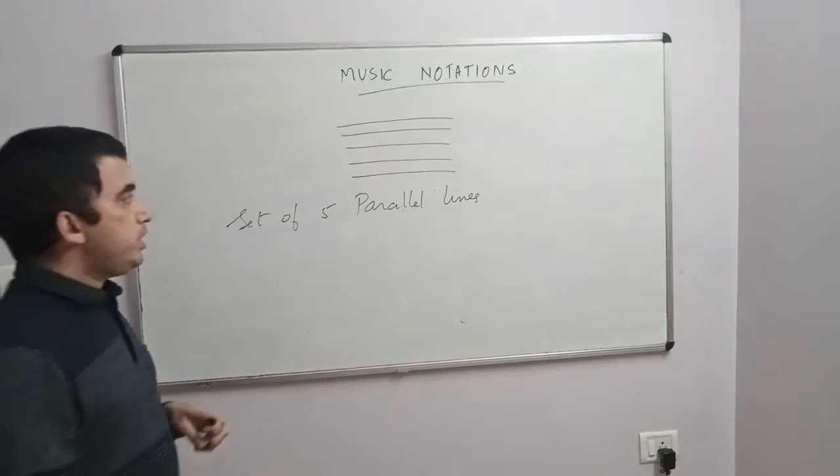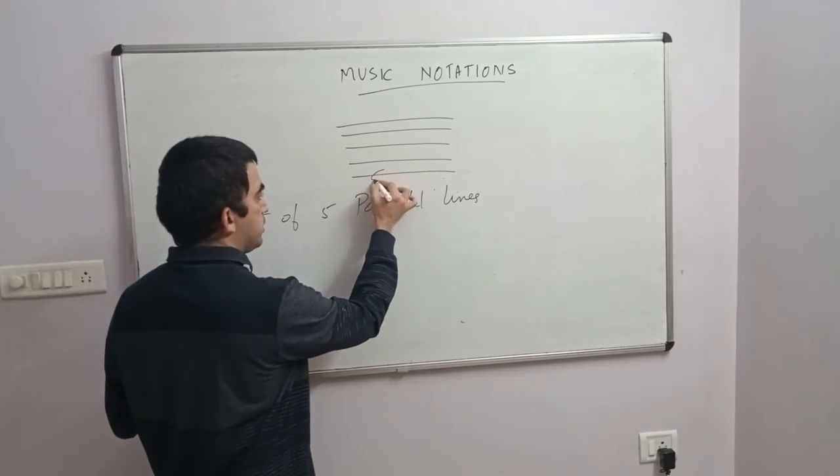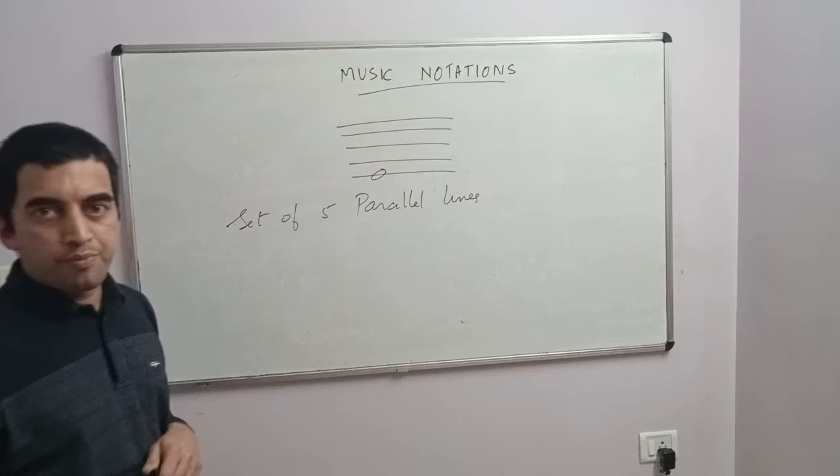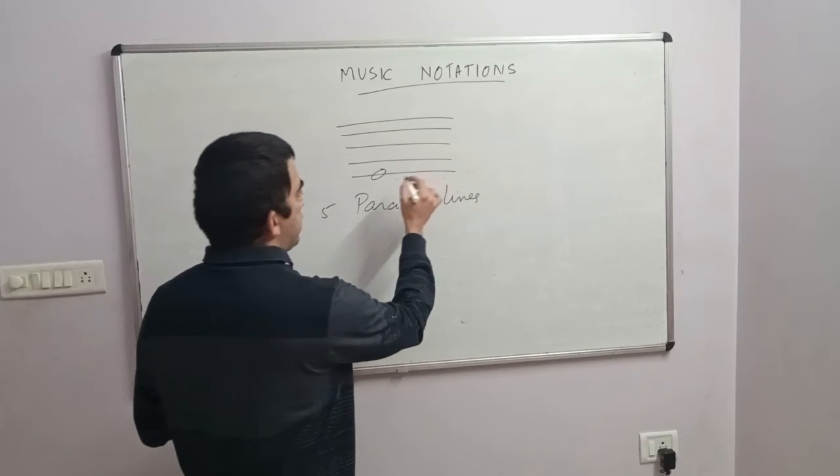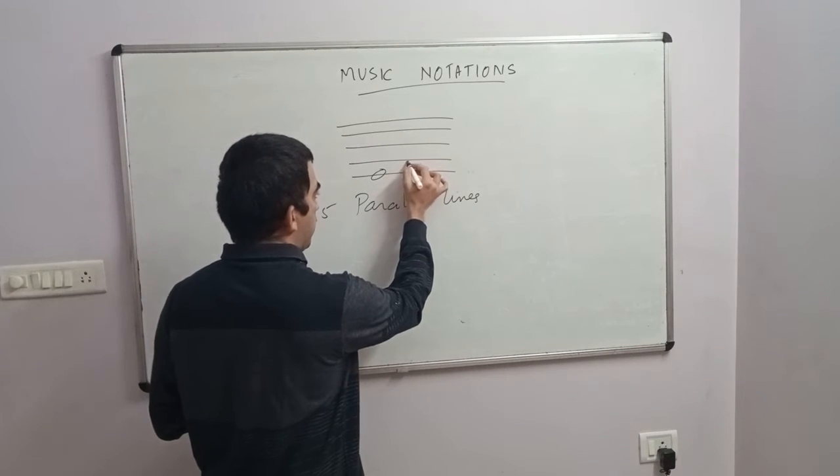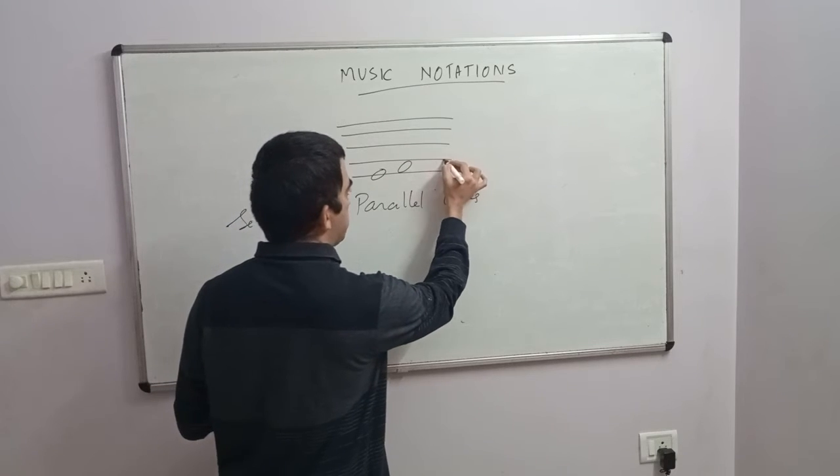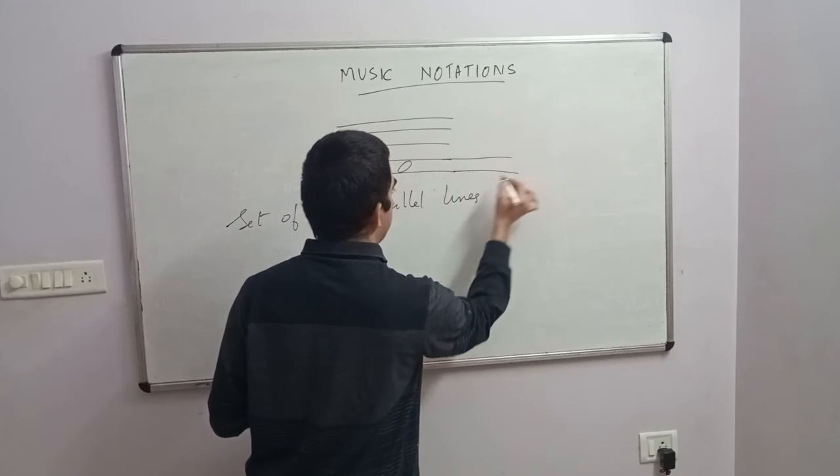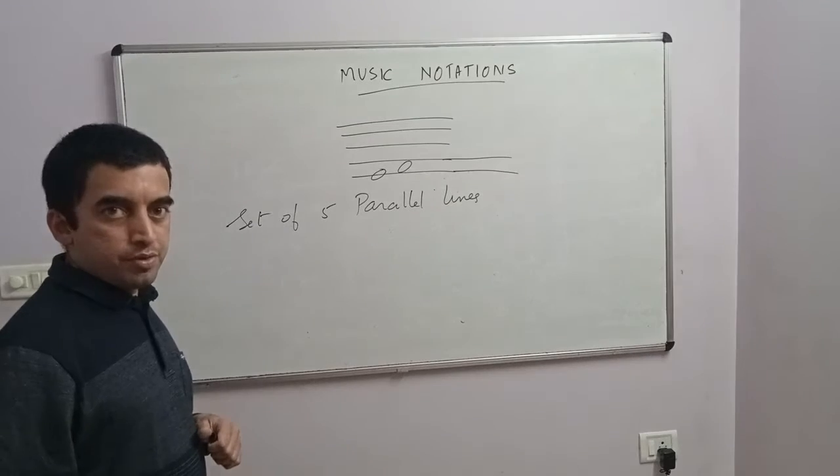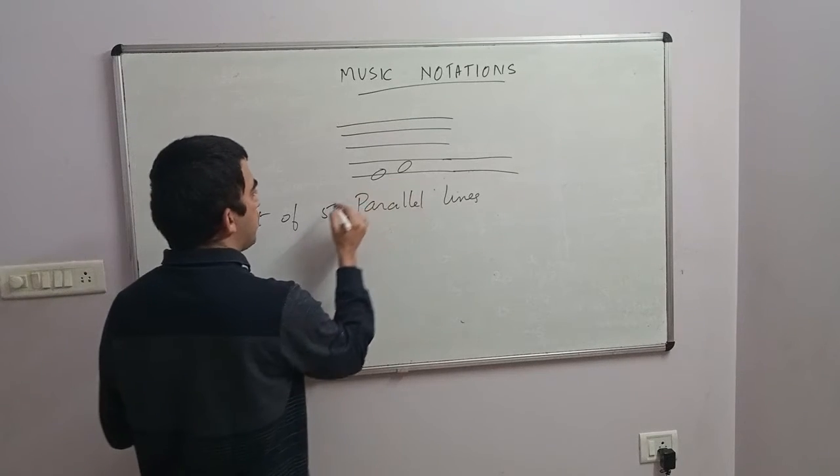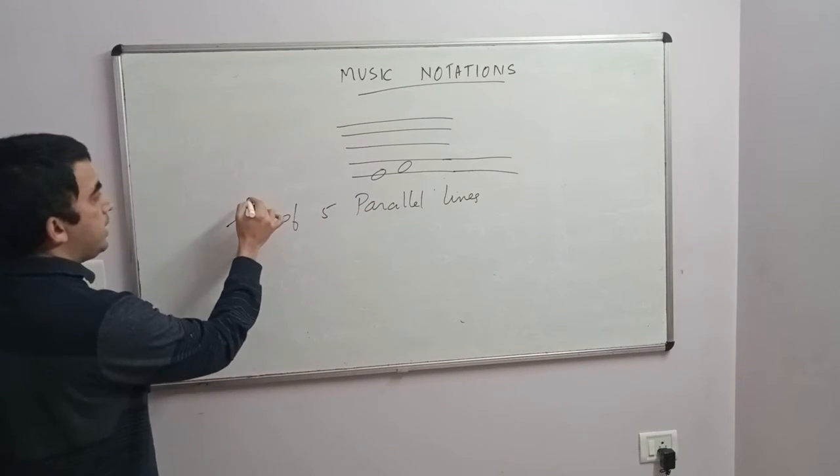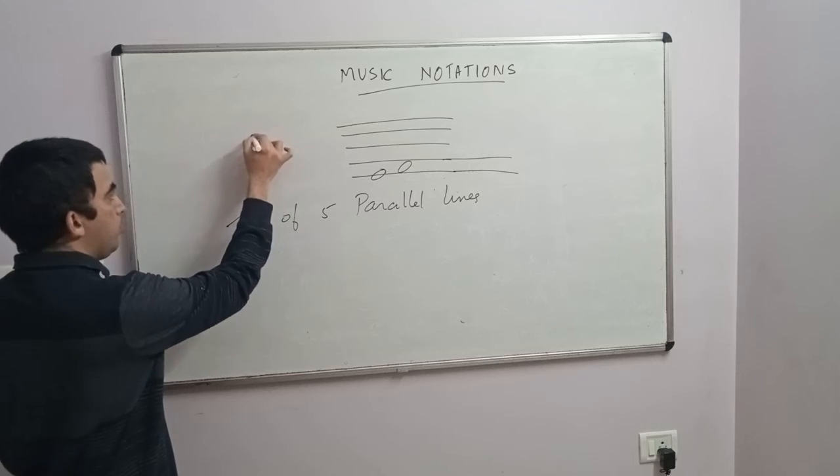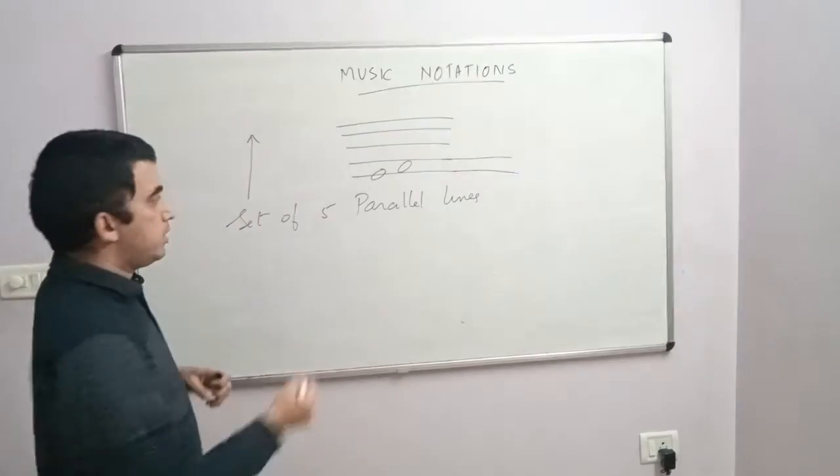Each note is denoted as such, like this. So you can either write the note on the line or in the space. You count the lines and spaces from below upwards.